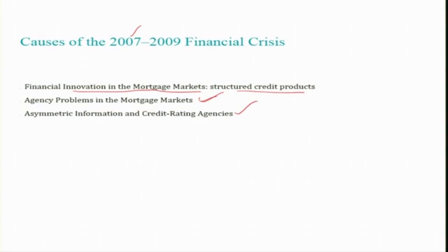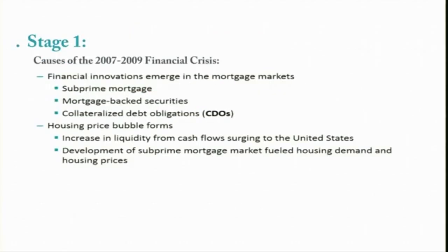This conflict of interest arose because of the large fees they earned from advising clients on how to structure products, combined with the income from rating as well — and all of this led to the financial crisis. In Stage 1, the causes of the 2007-8-9 financial crisis were mainly financial innovations emerging in the mortgage market. In the first phase, the asset price effect was driven by subprime mortgages, mortgage-backed securities, and collateralized debt obligations, which contributed to the first stage of the financial crisis.